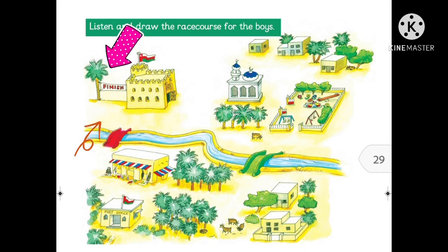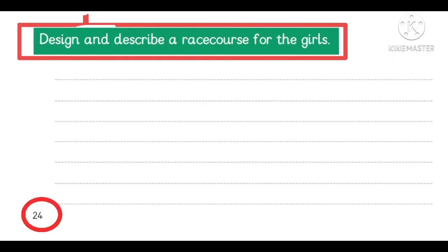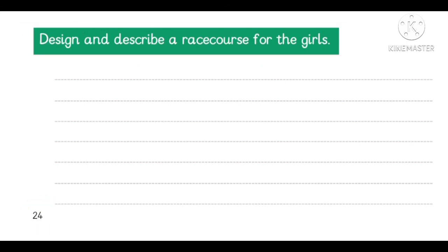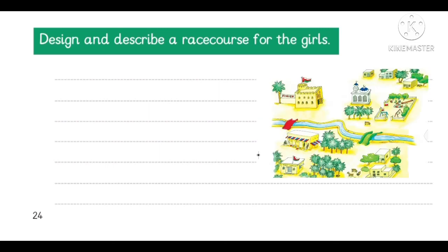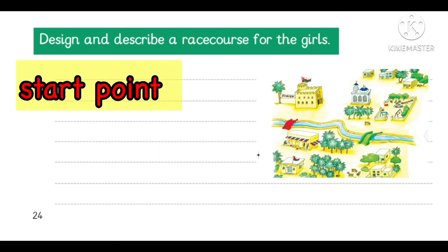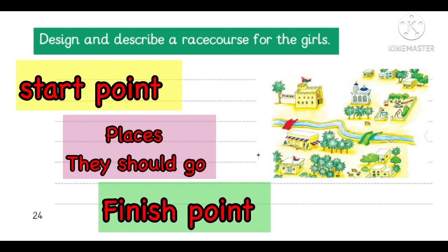Then they turn right past the souk and cross the village again by the red bridge. Then they run back to the fort — the finishing line is next to the fort. On activity 2 of page 24, you are going to design and describe a race course for the girls using the map from activity 1. First, write the starting point, then write the places they should go — for example, the mosque, the park, the palm trees — and finally write the finishing point.